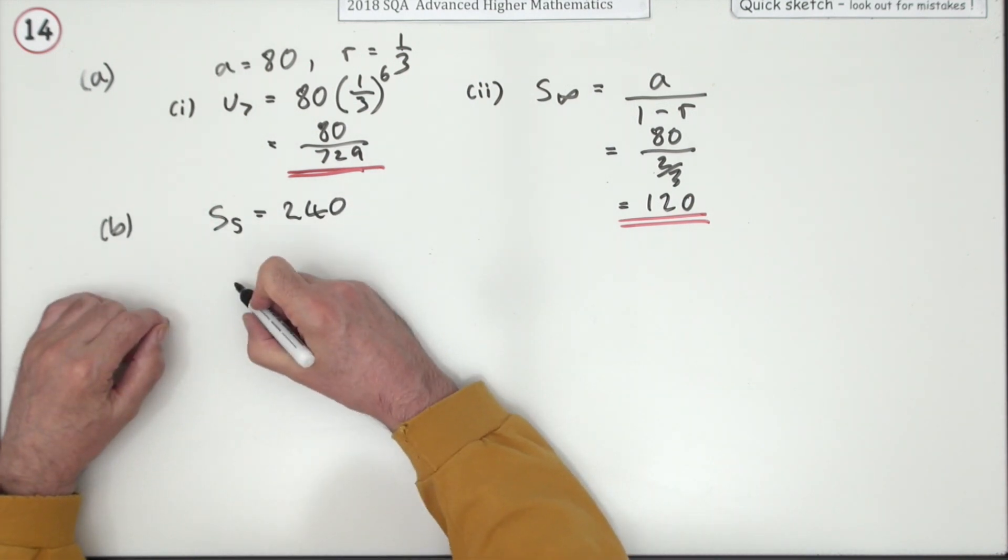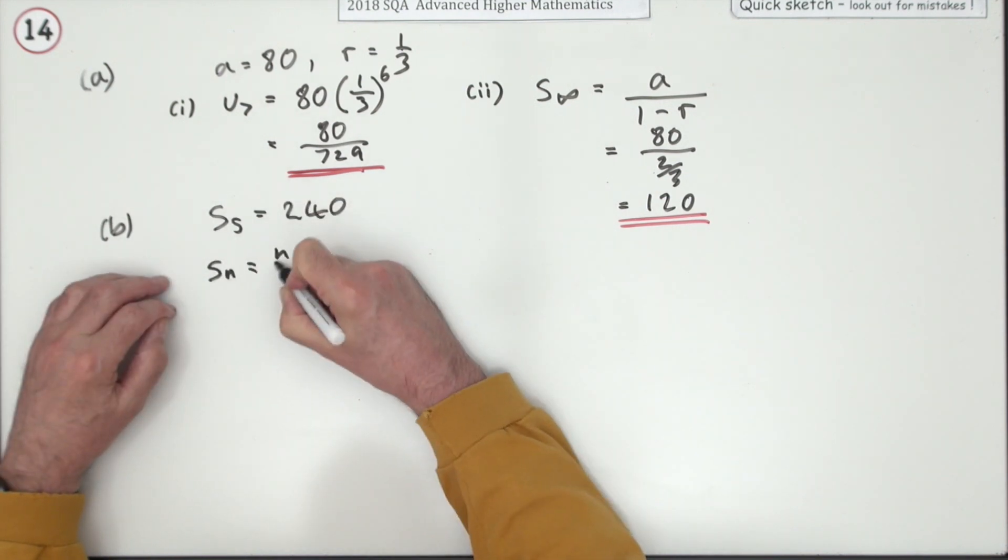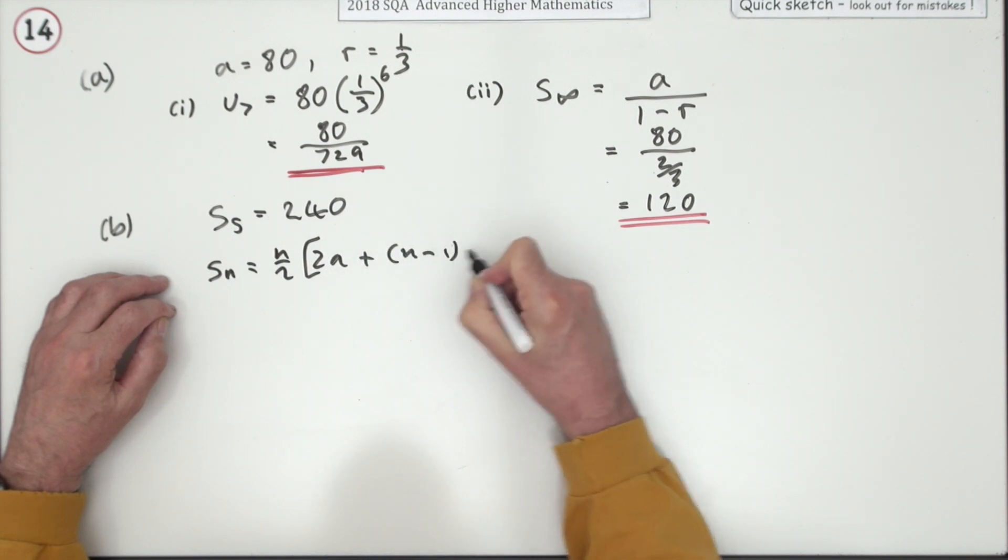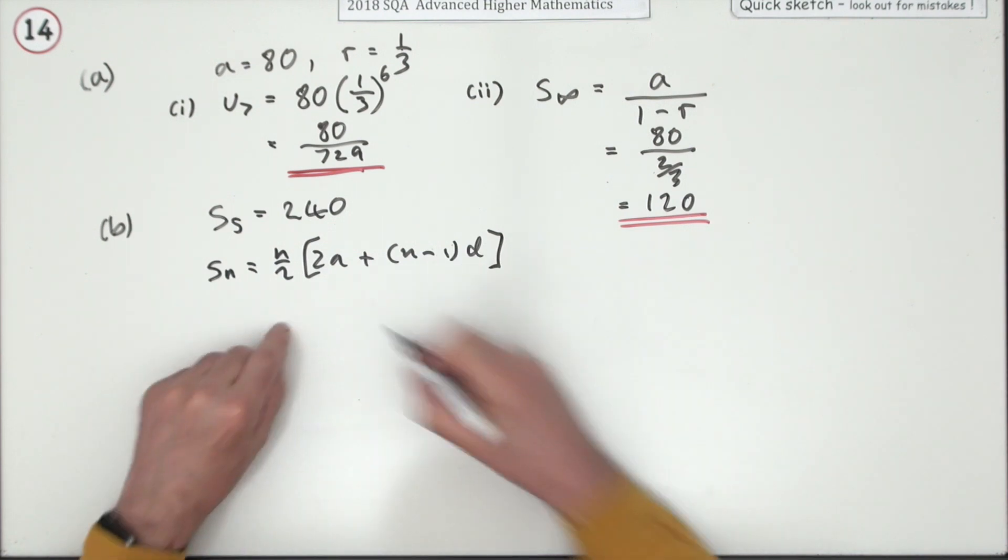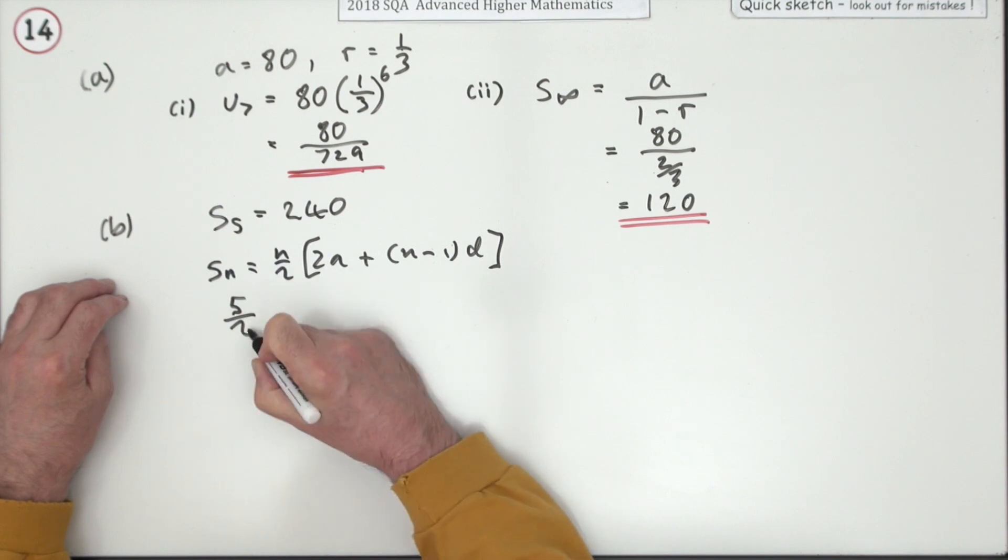You look it up at the front, and you'll see this. Sn, I'll just put Sn first of all, is n upon 2 times 2a plus n minus 1, lots of d. So, you just fill in all the figures. The only thing you don't know is d. I'll just write it the other way around. So, it was five terms. So, it's 5 upon 2.